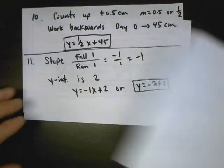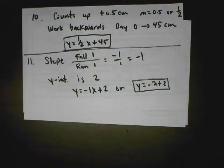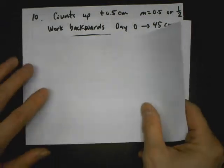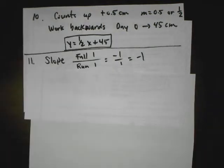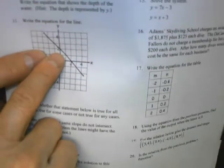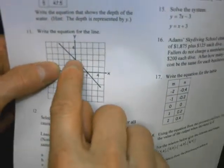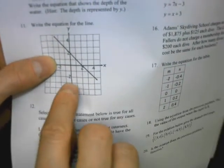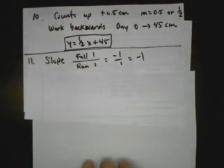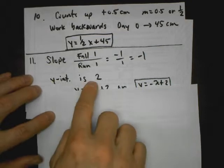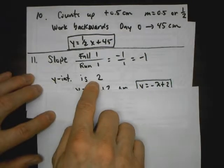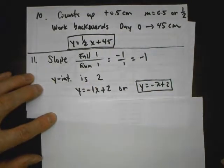For number 11, they give us a graph and want us to find the equation. I see it hits the y-axis at 2. To get from one point to the other, I go down 1 and over 1 — that's a slope of negative 1. The y-intercept hits the y-axis at 2, so the equation is y equals negative 1x plus 2.